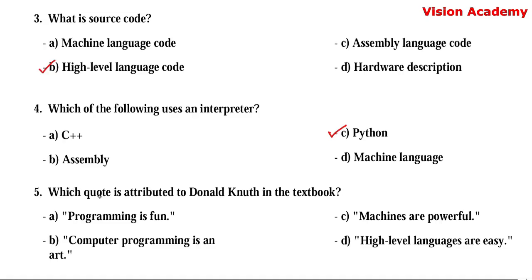Question number 5. Which quote is attributed to Donald Knuth in the textbook? Option A: programming is fun. Option B: computer programming is an art. Option C: machines are powerful. Option D: high level languages are easy. Here, option B — computer programming is an art — is the right answer.